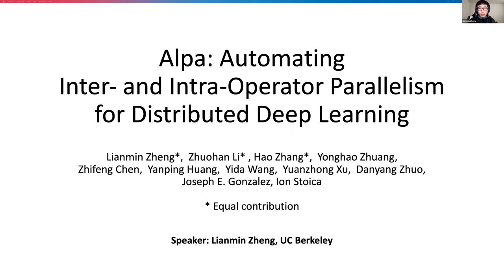Hello everyone. I'm Lian Ming Zheng from UC Berkeley. In this talk, I'm going to talk about ALPA: Automating Inter- and Intra-Operator Parallelism for Distributed Deep Learning. ALPA is a system we built to automate model parallel training of large neural networks. I collaborate closely with Zhuohan and Hao on this project.